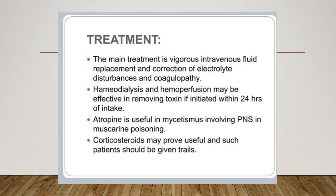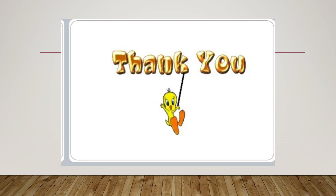Coming to treatment: the main treatment is vigorous intravenous fluid replacement and correction of electrolyte disturbance and coagulopathy. Hemodialysis and hemoperfusion may be effective in removing toxins if initiated within 24 hours of intake. Atropine is useful in cases involving muscarine poisoning. Corticosteroids may also prove useful and such patients should be given trials.